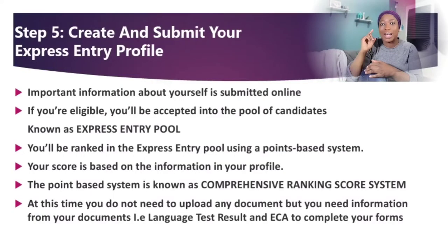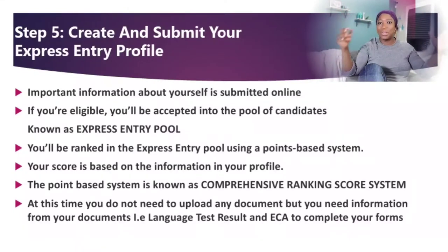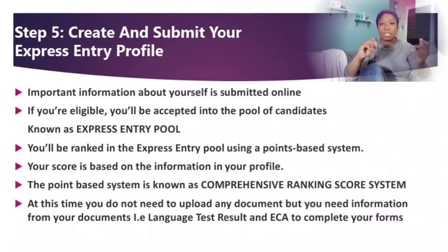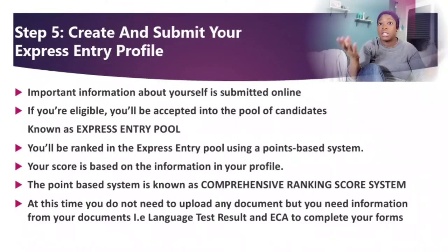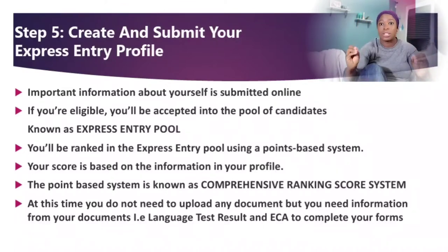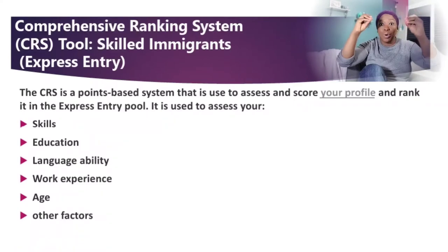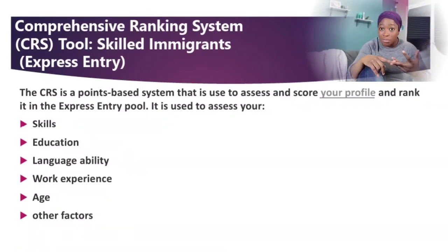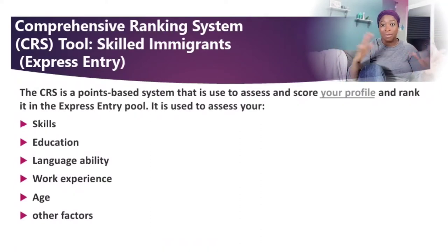The Express Entry pool is where you're placed with other eligible candidates. Once you're in the pool, IRCC gives you points based on several factors: your age, education, skills, experience, and if you have a spouse or partner, they also get points if they complete their education assessment and language test. The scoring system is called the Comprehensive Ranking System (CRS). Your total CRS score is used to rank you in the pool. You can calculate your score using the CRS tool — I'll put the link in the description box.